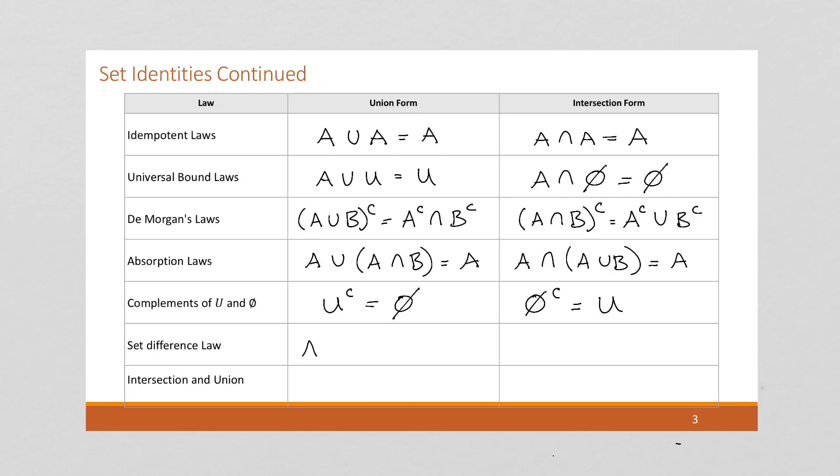Set difference, this is a very useful definition that we will use a lot. If we say A minus B, remember what that means is we take the set A and remove everything that's also in B. So we can write this as A intersect B complement. So again, anytime you see the set difference with the minus sign, this is really what's going on. And that does not have an intersection form.